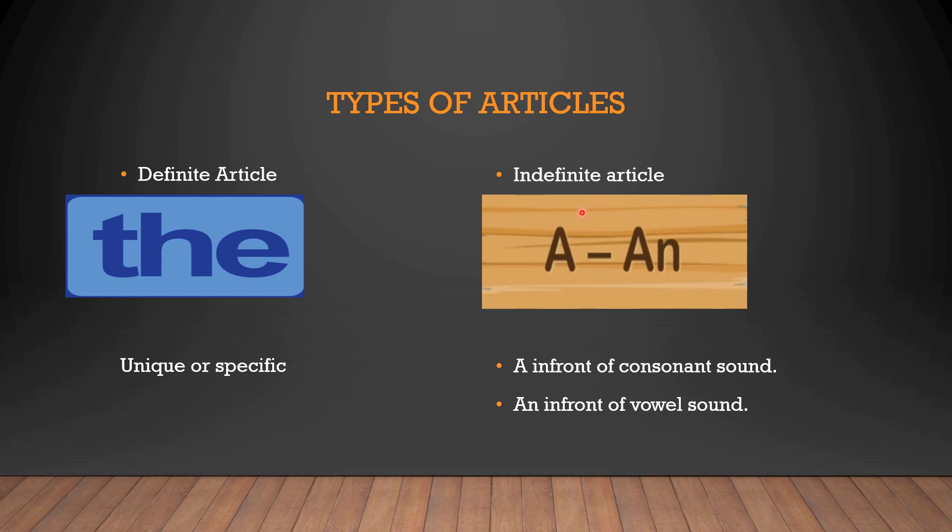And here in indefinite article, we have two articles. One is a and the other one is an. So a is used in front of a consonant sound, whereas an is used in front of the vowel sounds.